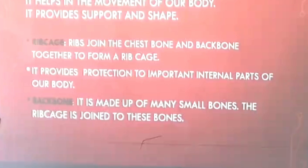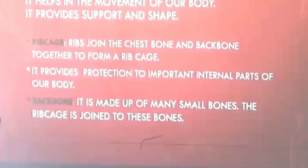We have the rib cage. Ribs join with the chest bone and backbone together to form a rib cage. The rib cage is important because it provides protection to important internal parts of our body, such as the lungs and heart, which are very important for the body.